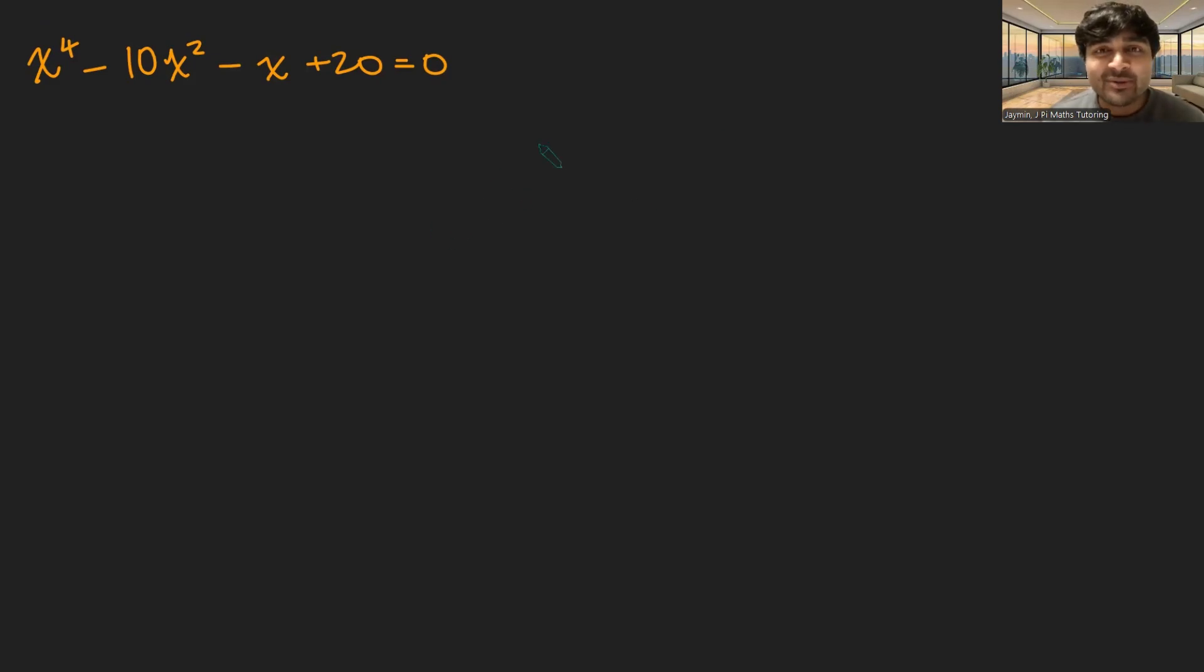Today I'm going to be solving this quartic equation: x to the 4 minus 10x squared minus x plus 20 equals 0. And what makes this interesting is this x term here, because if that wasn't there, this would just be a quadratic in disguise, and this would be relatively straightforward to solve. But we do have this x here. How do we deal with this?